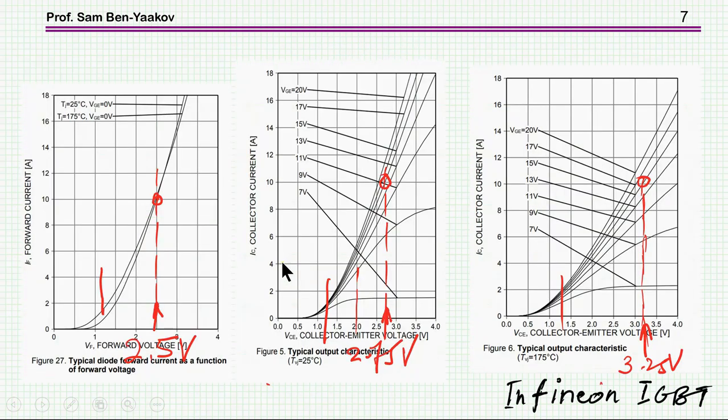But if you look at the VI characteristics of a typical IGBT, this is just an Infineon device, and look at the VI of the diode and the IGBT itself. Now, we see here that the break is sort of one, between one and one and a half, one and one and a half, same thing here.